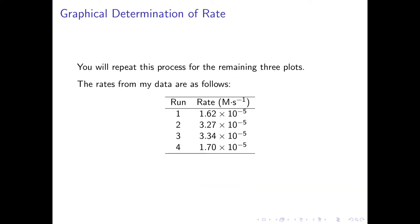You will repeat this process for the remaining three plots. The rates calculated from the four plots are: run 1 — 1.62 times 10 to the negative 5 M/s; run 2 — 3.27 times 10 to the negative 5 M/s; run 3 — 3.34 times 10 to the negative 5 M/s; and run 4 — 1.70 times 10 to the negative 5 M/s.